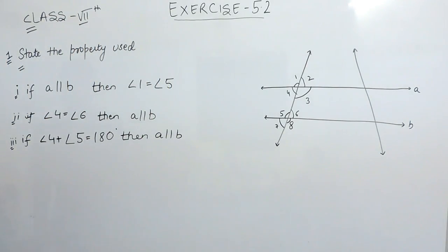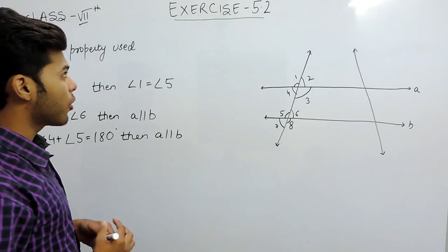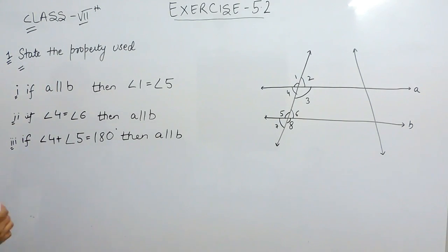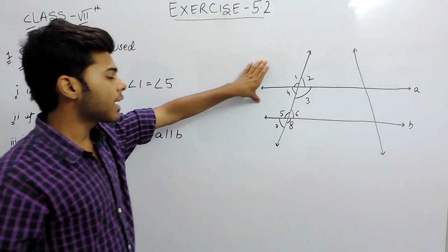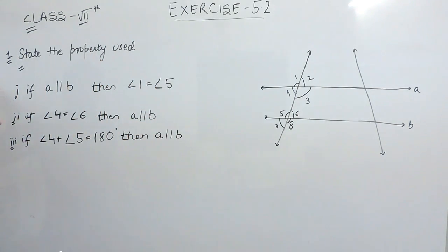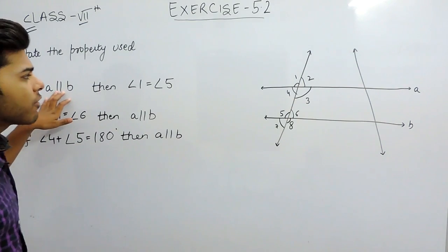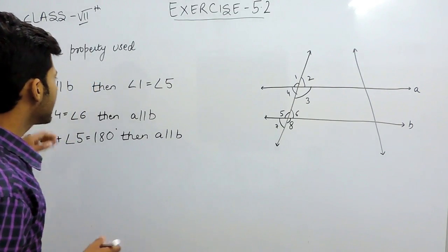Hello everyone, now we will do the first question of exercise 5.2. In this question, we have to suggest the property that has been used. Here we are given a diagram and three conditions. According to the conditions, we have to provide the property.